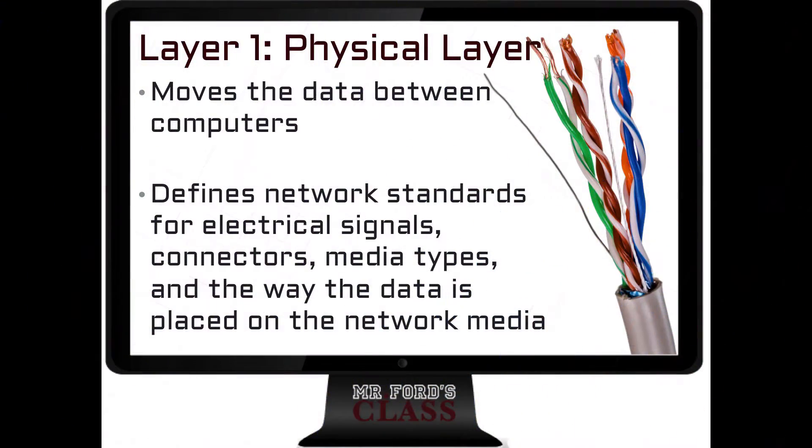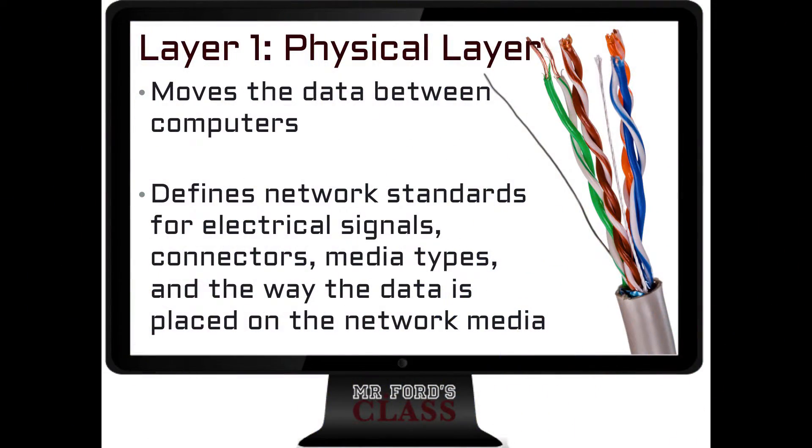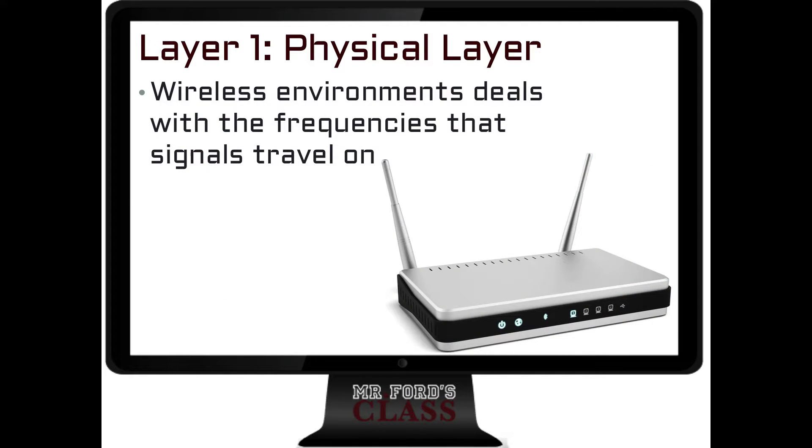The physical layer defines the networking standard for electrical signals, connectors, media types, and the way data is placed on the network media. Wireless environments deal with frequencies that signals travel on. So the physical layer is all about physically sending the information — the actual hardware connections that move information from one device to another device.